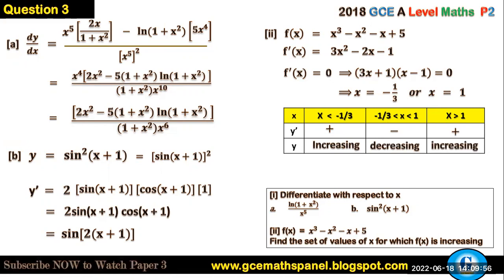So the set of values of x for which f(x) is increasing should be from negative infinity to -1/3, -1/3 is not included, and continue from 1 from above to positive infinity. That's an interval form or you can just state it by saying x is less than -1/3 or x is greater than 1.